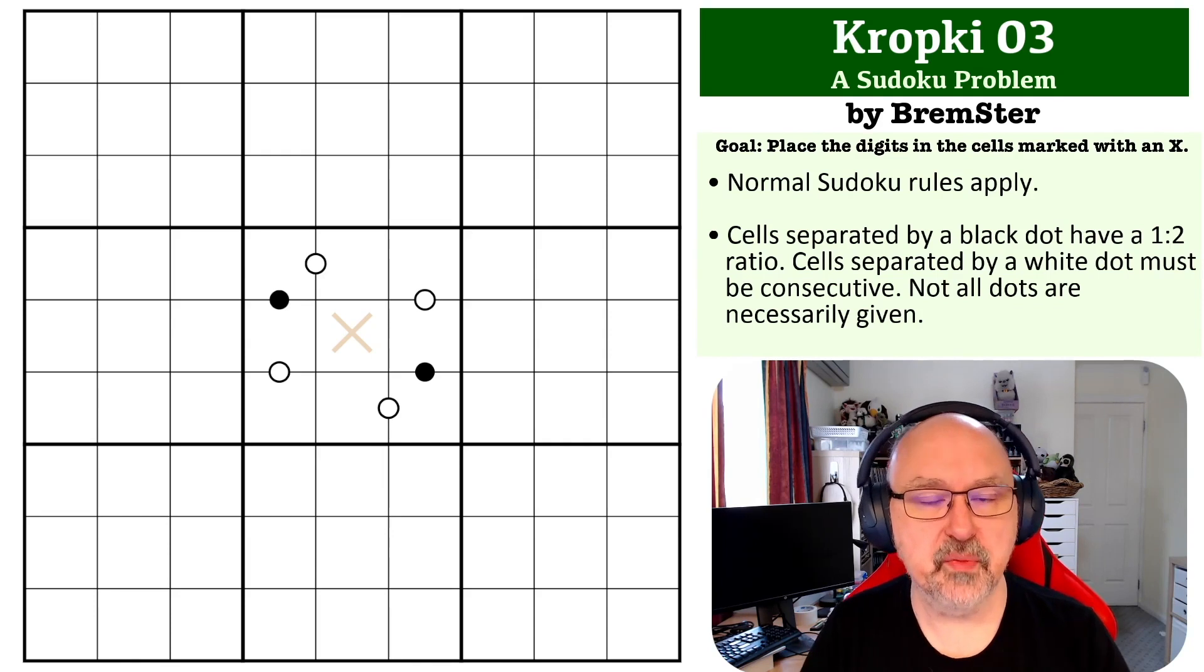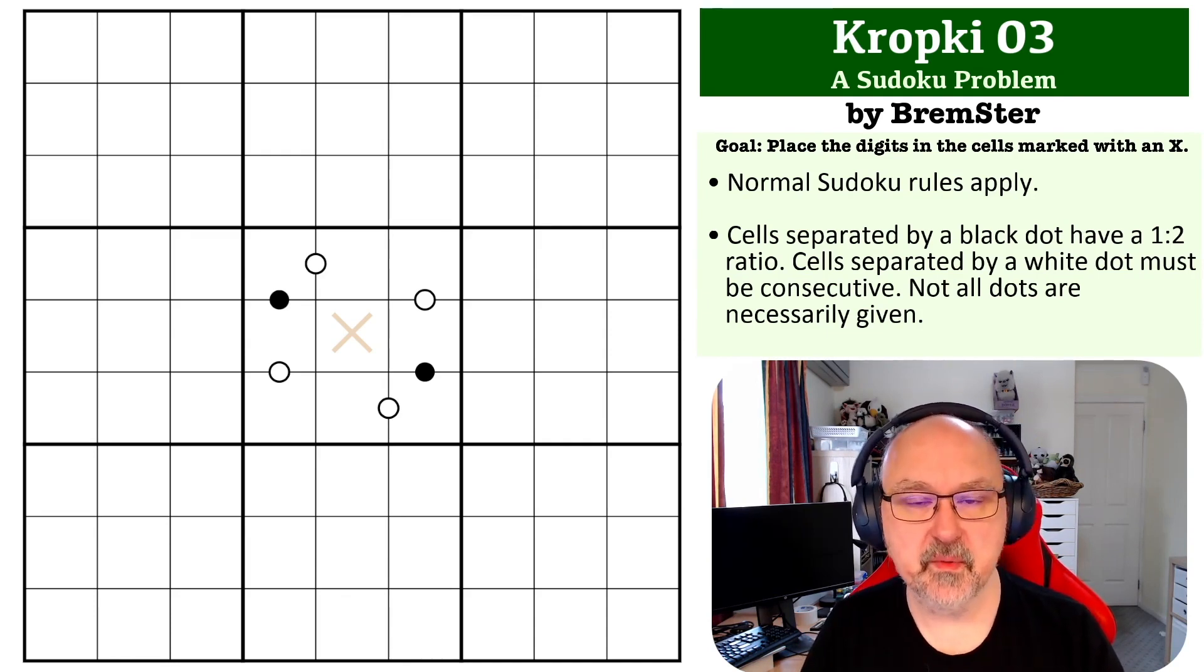There's a link to the problem below where you can give this one a shot. You only need to place the digit in the cell marked with an X. So you only need to find a single digit. Feel free to pause the video. I'll be back in a few seconds to explain how this one works.